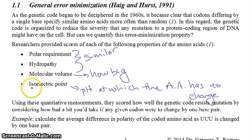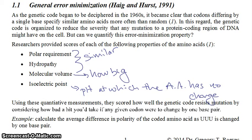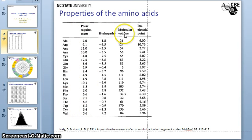They quantified each one of these properties for each one of the 20 amino acids, which can be illustrated in this table here. For example, for alanine, the polar requirement was 7.0, its hydropathy 1.8, molecular volume 31, and isoelectric point 6.0. The takeaway point is that each one of these amino acids has a number assigned to each one of these properties for all 20 amino acids, and it's important to have a number so that you can score the amino acid changes.